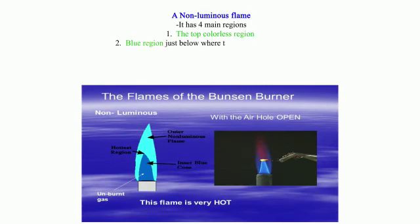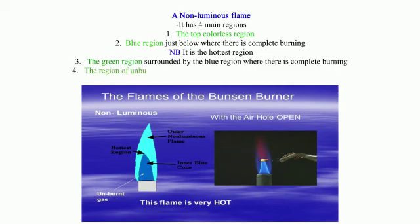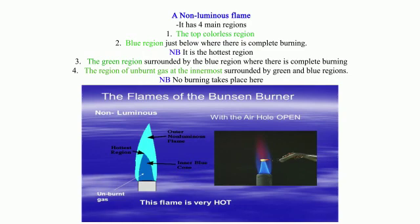The blue region just below where there is complete burning. NB: It is the hottest region. 3. The green region surrounded by the blue region where there is complete burning. 4. The region of unburnt gas at the innermost, surrounded by green and blue regions. NB: No burning takes place here.